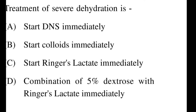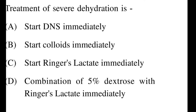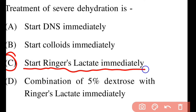Next question: Treatment of severe dehydration? Options: A: start DNS immediately, B: start colloids immediately, C: start Ringer's Lactate immediately, D: combination of 5% dextrose with RL immediately. The right option is C — start Ringer's Lactate quickly. In severe dehydration the type is unknown, so Ringer's Lactate isotonic solution is started.